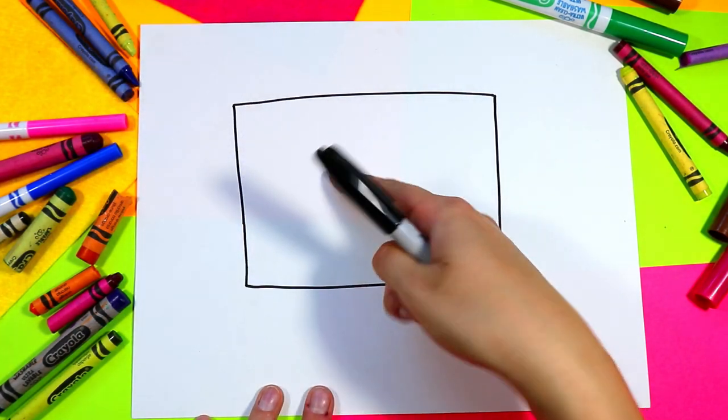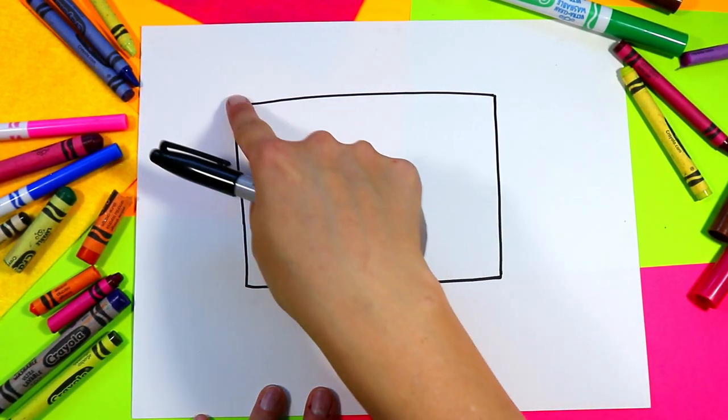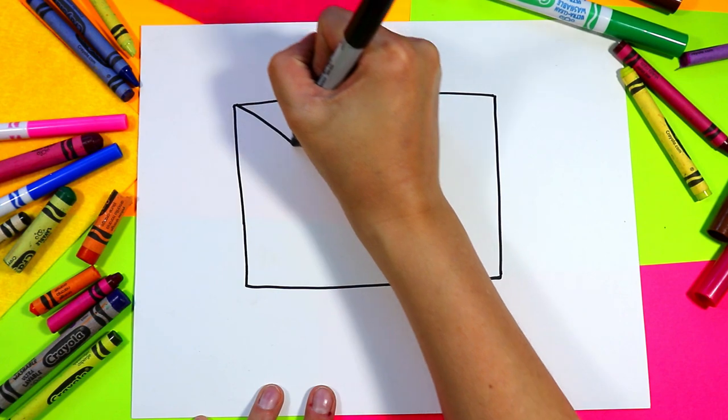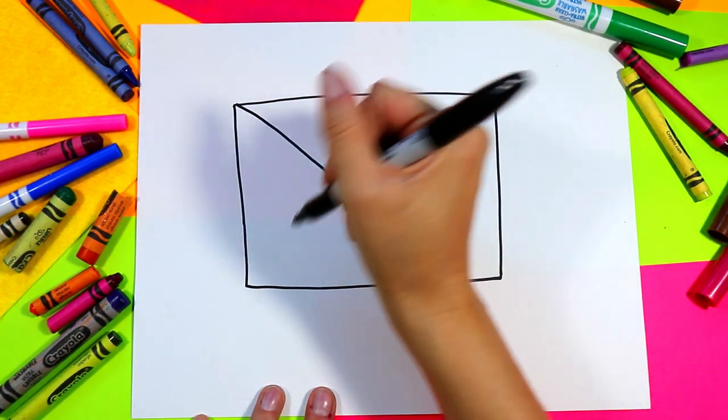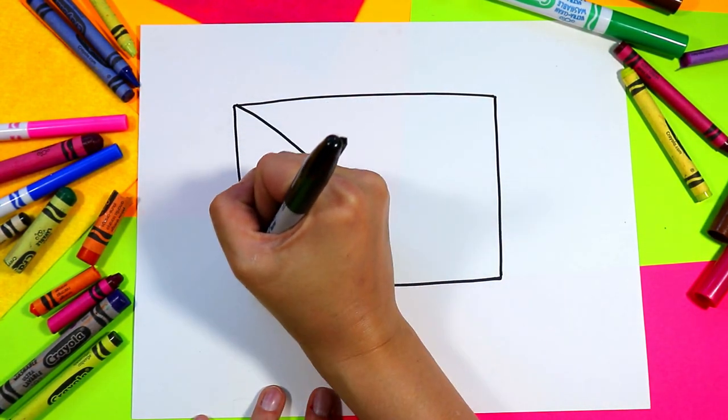Next we're gonna be drawing a side, two diagonal lines to make a sideways triangle. So we're gonna draw one line in to about the halfway mark and then bring it back out in a diagonal.